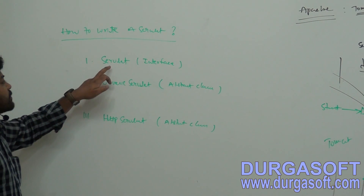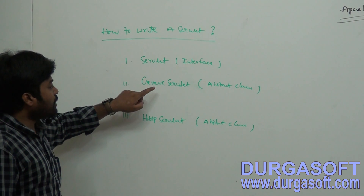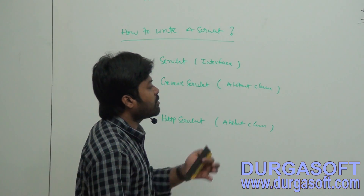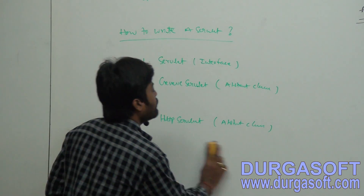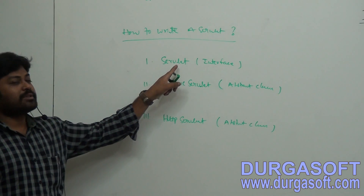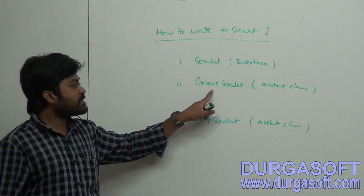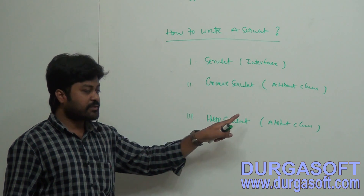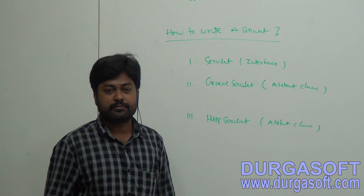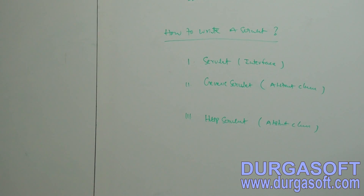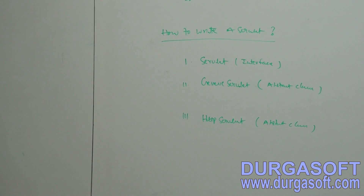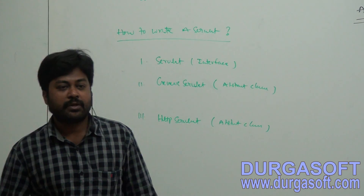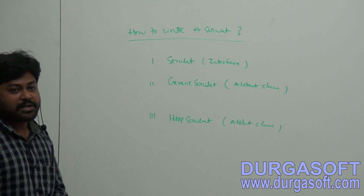You can implement your class using the servlet API — the servlet interface, generic servlet class, or HTTP servlet classes. If it is a servlet interface, how many methods are there in this interface? If it is a generic servlet, how many abstract methods are there? If it is an HTTP servlet class, which method do we need to override? There are five methods you need to implement if it is a servlet interface.